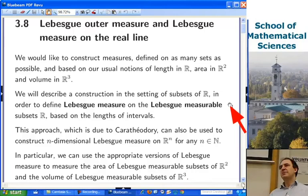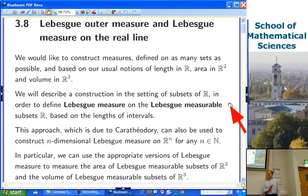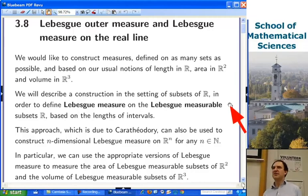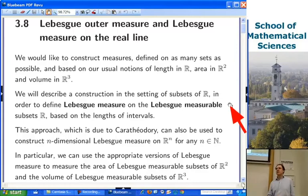We're going to work in one dimension, but the construction we can talk about is going to be a pretty general one that you can use in any dimension you like. We're going to be working with a construction based on length of intervals. If you want to do the two-dimensional version, you work with areas of rectangles. People agree what the area of a rectangle is, and people agree what the volume of a cuboid in three dimensions is. And that's your starting point, and the same for length of intervals. That's your starting point, and from there you have to build up your notion of the measure of as many sets as possible.